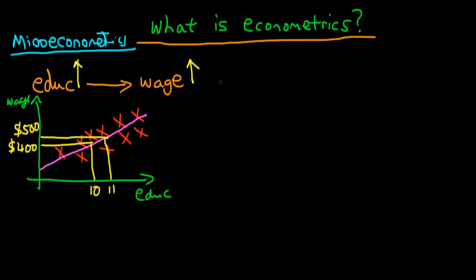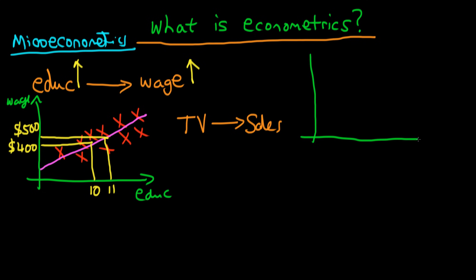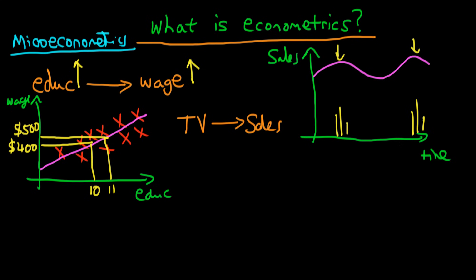Another micro-econometric relationship we might be interested in is: what is the effect of TV advertising on a company's level of sales? If I was to draw a graph of a company's level of sales over time, we might have something which shows some sort of seasonality — perhaps this is coffee sales or ice cream sales — and we might be interested in whether those peaks which we observe in the data are caused by TV advertising, which might look something like the bars I've drawn below.